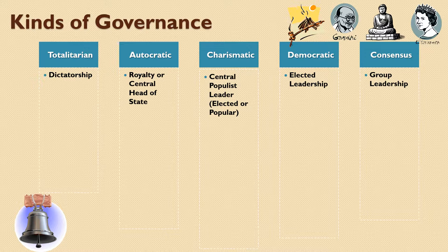Dictators are not necessarily familial, meaning you don't pass on your dictatorship to your son or daughter. But autocratic government does. There's usually a line of succession, and that line of succession is usually familial, blood-related, with a lot of existing rules around it that people generally follow. Charismatic governance is with a central populist leader.